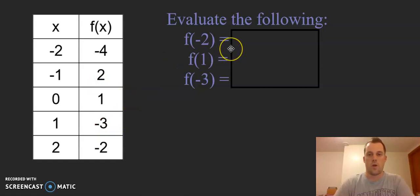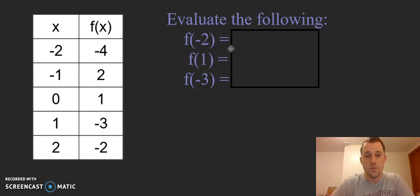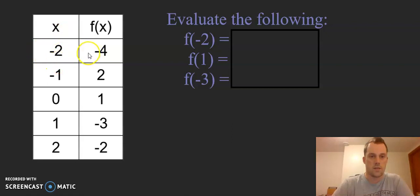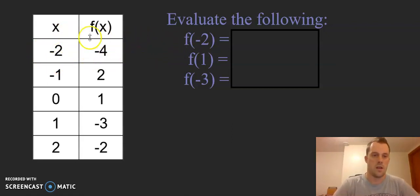So if we're asked to evaluate f of negative 2, that negative 2 is representing the x value. So we go to our x column at x equals negative 2, and we have f of x is negative 4. So this is telling us that f of negative 2 equals negative 4.